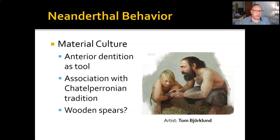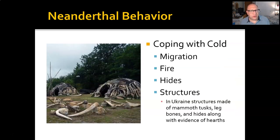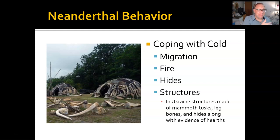We have lots of material culture. First, we think they used their teeth frequently as tools — there's lots of wear and tear, almost like using them as a third hand, whether tying something or working a piece of hide. They're associated with the Châtelperronian tradition, which is an extension of prepared core traditions. They may have had thick wooden spears. Their culture — and I call it culture because it very much is cultural — seems to vary from site to site. For instance, in Ukraine, they built structures out of mammoth tusks, leg bones, and hides, with evidence of long-term habitation.